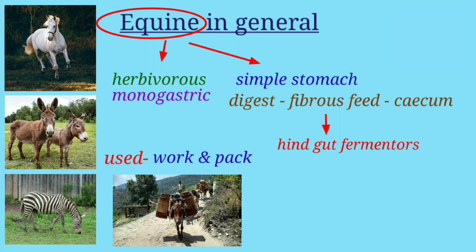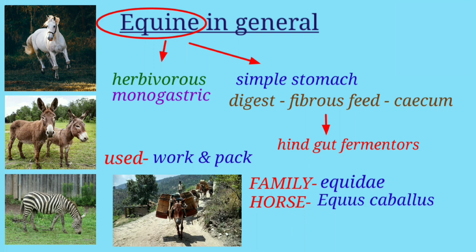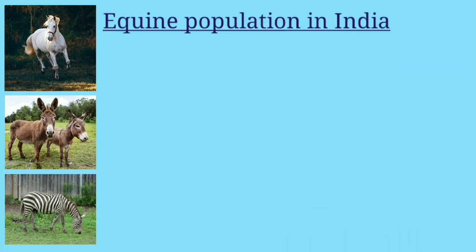All three species of equines belong to the family Equidae. The scientific name of the horse is Equus caballus and of the donkey is Equus asinus. The horse was probably the last farm animal domesticated by man, and appears to have been first domesticated in Central Asia or Persia more than 3,000 years ago.